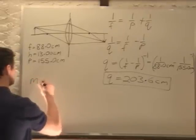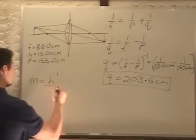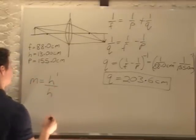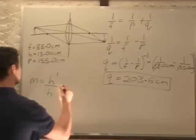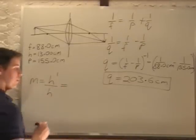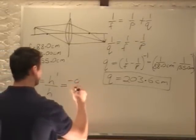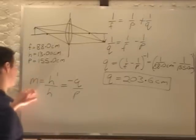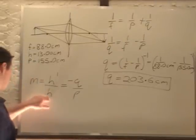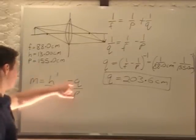So our magnification is equal to our final height divided by the initial height, which is also equal to negative Q over P. Since we don't actually know the magnification, we know our initial height, and now we know Q and P.